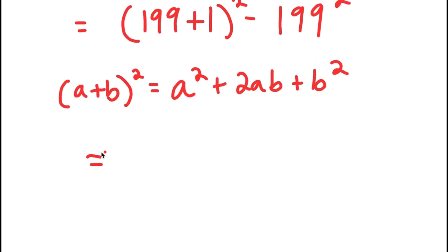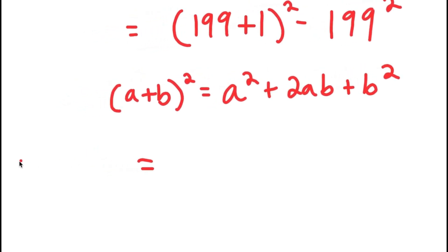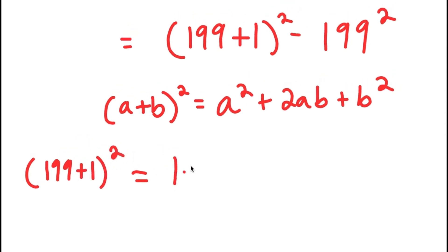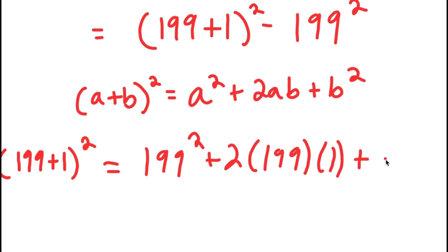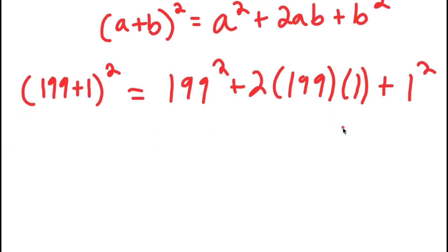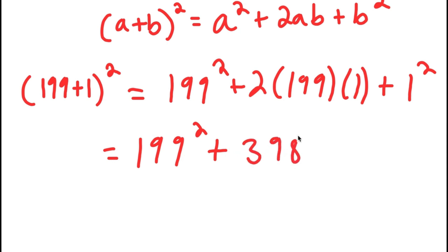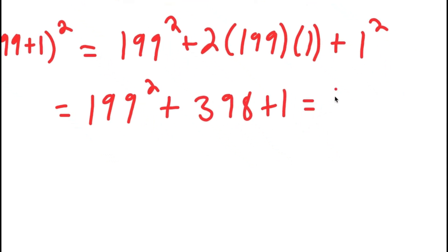This means that 199 plus 1, quantity squared, should equal 199 squared plus 2 times 199 times 1 plus 1 squared. And this is equal to 199 squared plus 2 times 199 plus 1, which is equal to 199 squared plus 399.